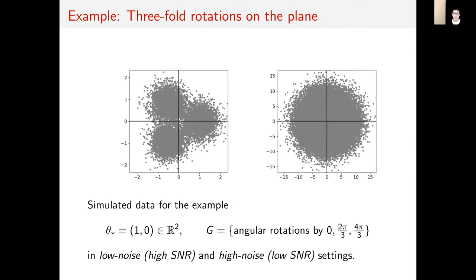To illustrate the problem, let's consider threefold rotations on the plane. Here I've plotted simulated data for an unknown signal being the point (1,0) and the group being these rotations. As you can see on the left, in the low noise regime, three distinct clusters remain. Whereas on the right, in the high noise regime, there's only a single large cluster around the origin, and it's not clear that the group has three rotations.